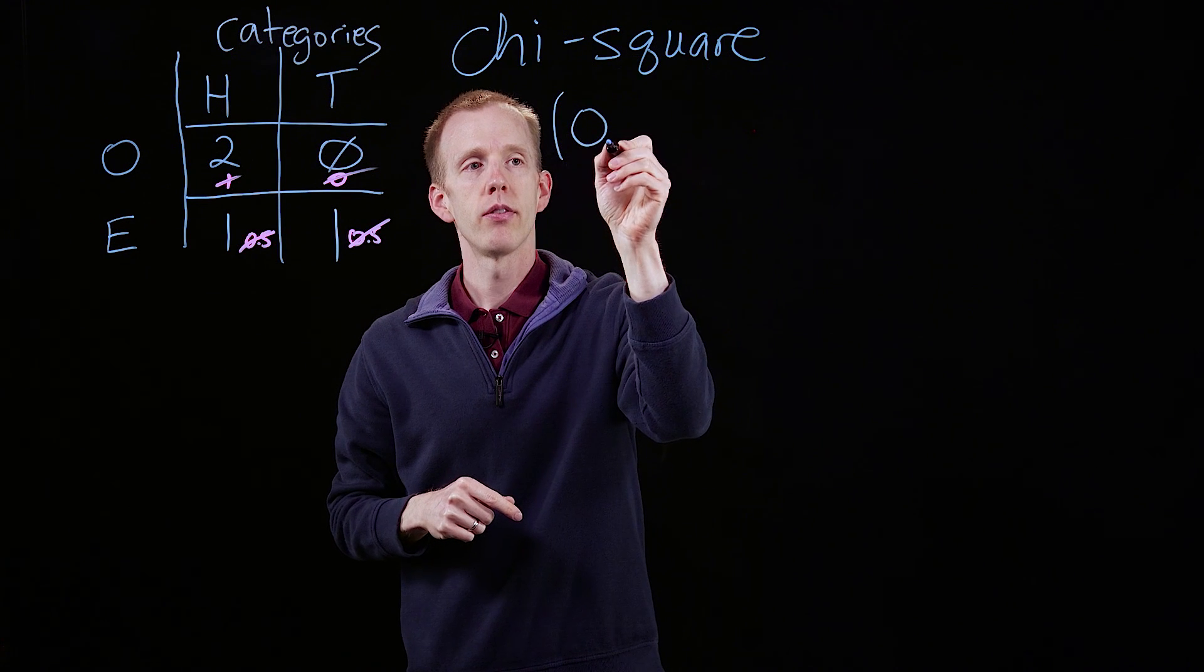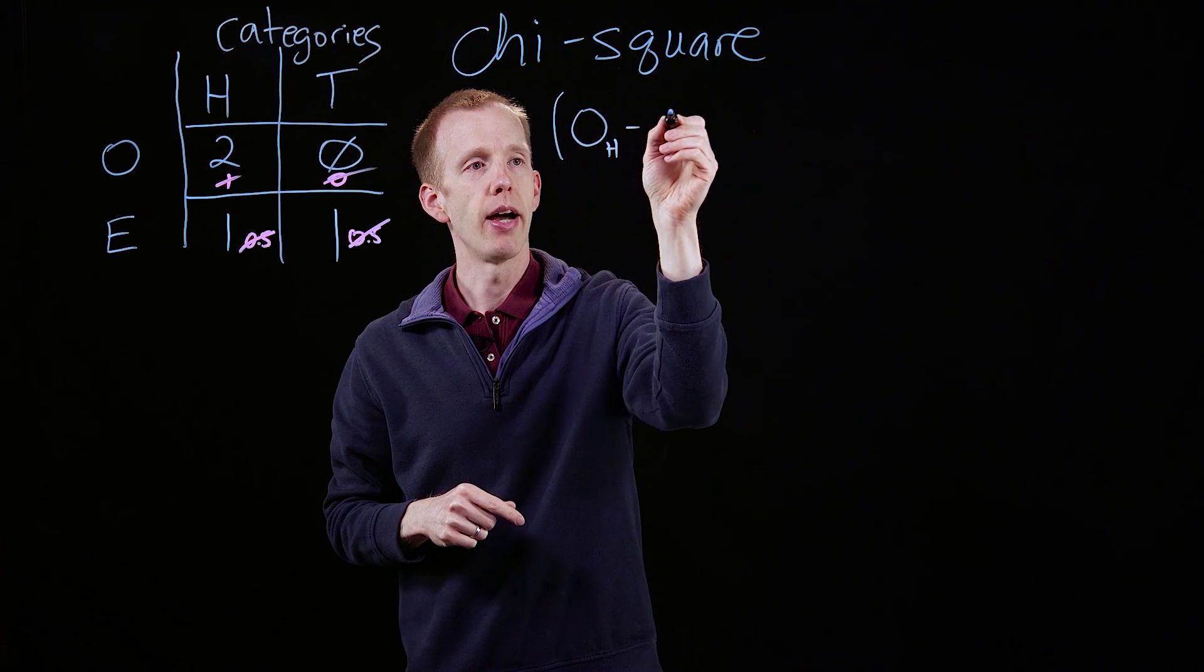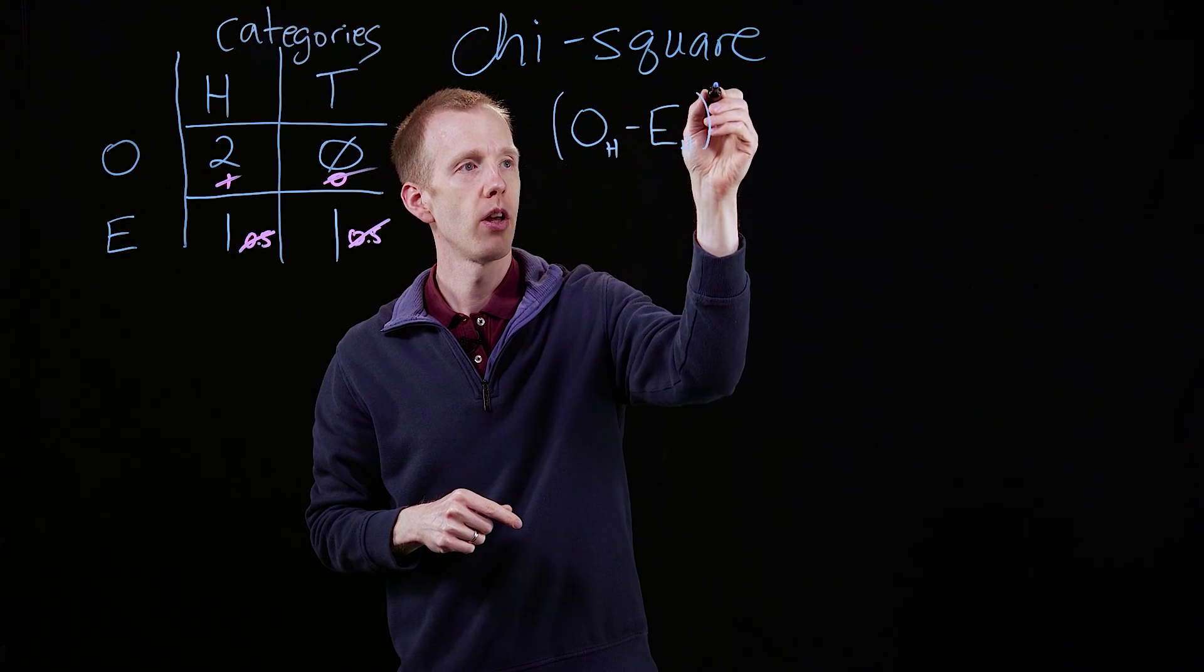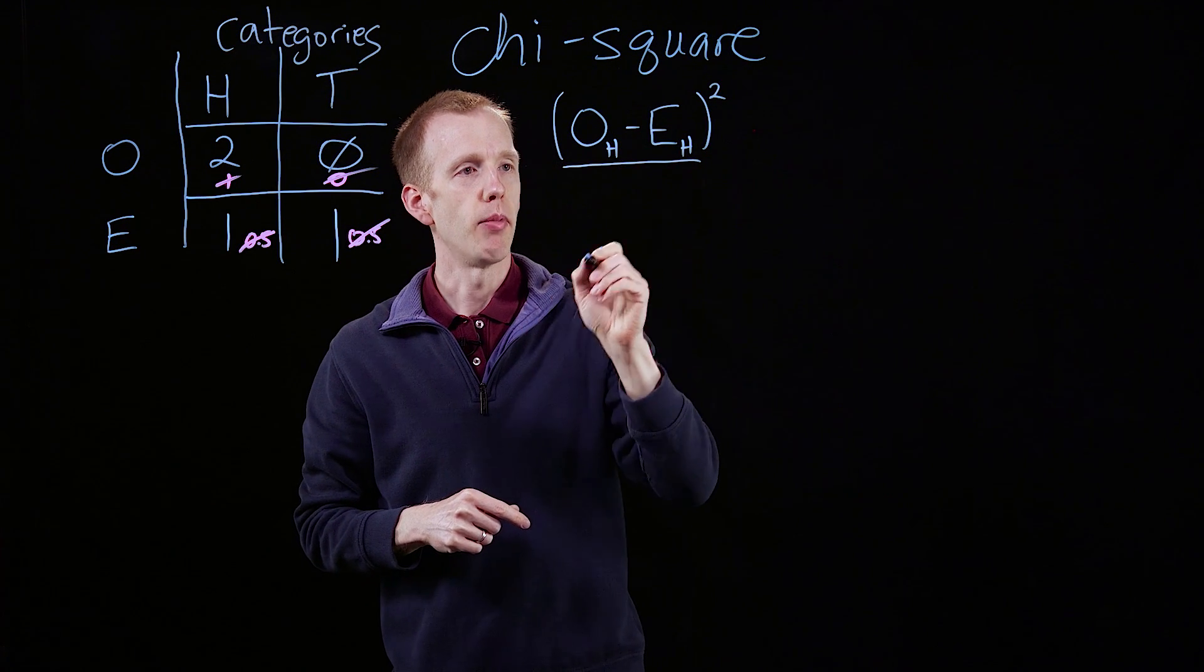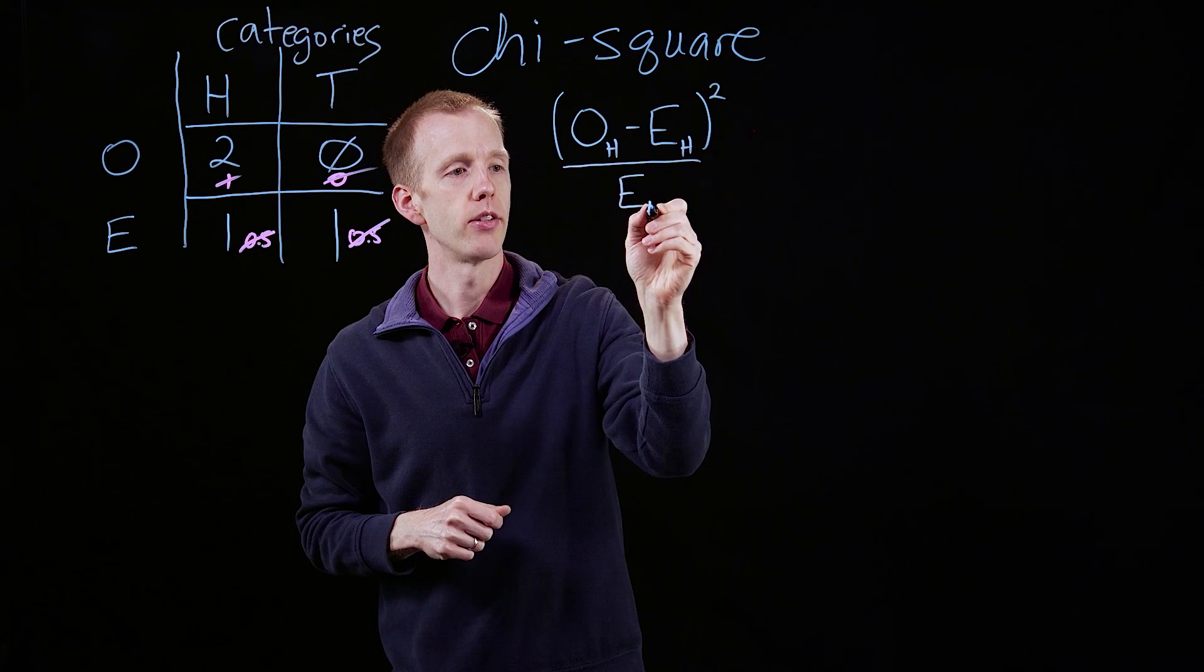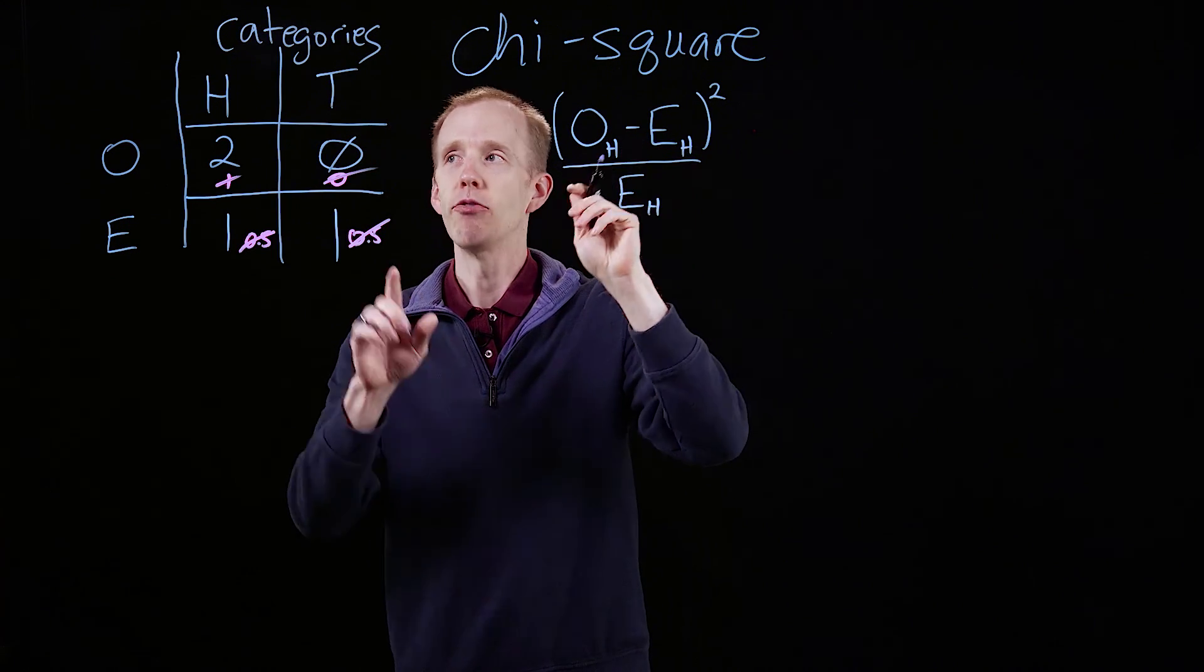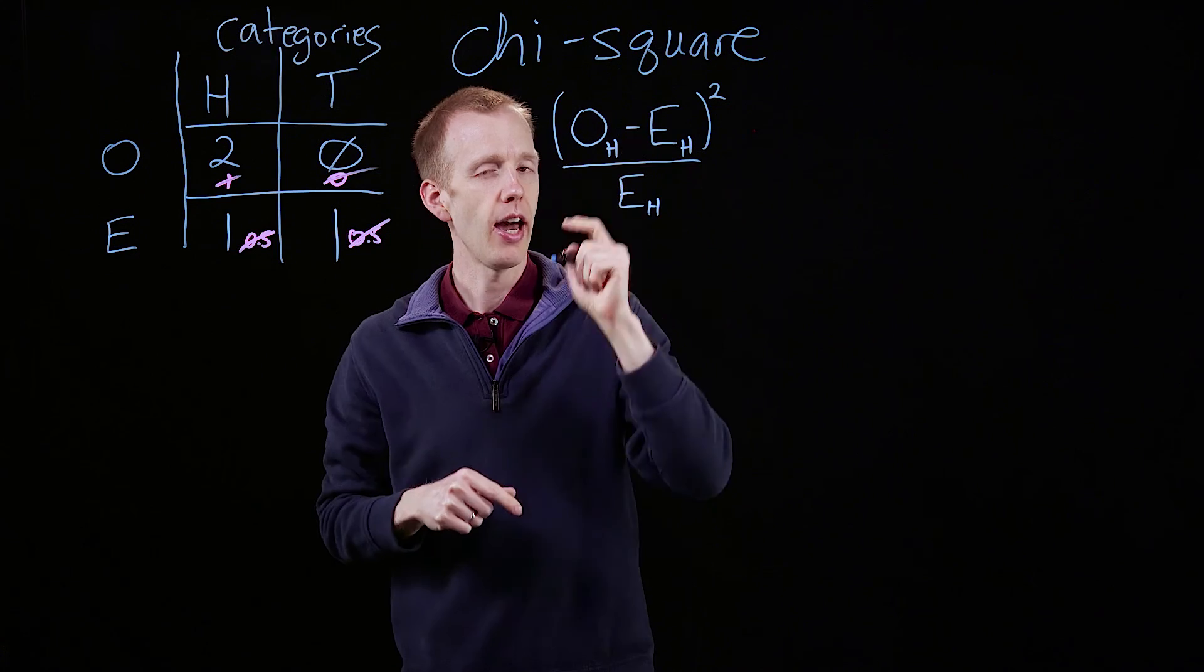The observed heads minus the expected number of heads, square that, divide it by the expected value of heads. And the total of that is the chi-square test statistic value. And then for every category, that's the category one, heads.